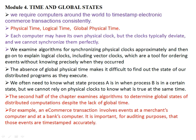The absence of a global physical time makes it difficult to find out the state of our distributed program as it executes. Since no global physical time exists in the distributed computing system, we cannot know exactly at what time one system executes — this is a key difficulty. We often need to know what state process A is in when process B is in a certain state, but we cannot rely on the physical clock for this.